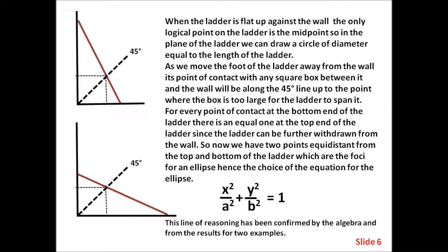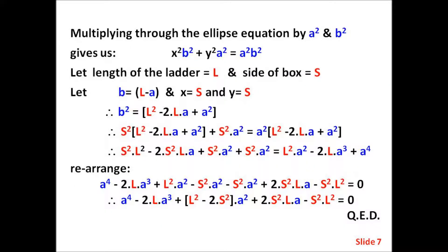This line of reasoning has been confirmed by the algebra and from the results for two examples. Multiplying through the ellipse equation by a-squared and b-squared gives us: x-squared·b-squared plus y-squared·a-squared equals a-squared·b-squared. Let the length of the ladder equal l and the side of the box equal s. Let b equal l minus a, x equals s, and y equals s. Therefore b-squared equals l-squared minus 2·l·a plus a-squared, which on substituting into the equation for the ellipse gives us two lines of algebra.